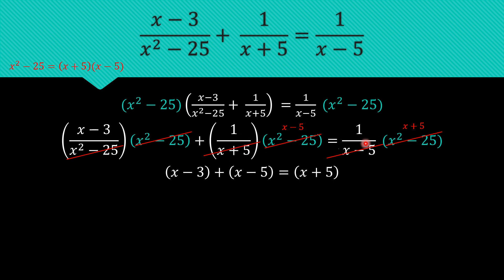So after canceling the denominators, what we have left for the whole equation would be x minus 3 plus x minus 5 equals x plus 5. So we remove the parenthesis, what we have would be 2x minus 8. That's combining x here plus x here and negative 8, we get that by combining negative 3 and negative 5.